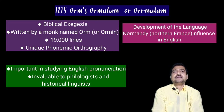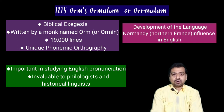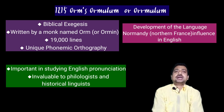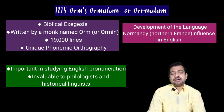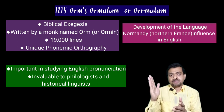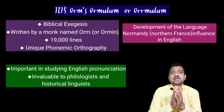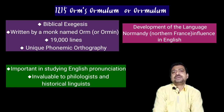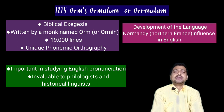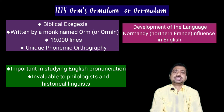In 1215 we have Orm's Ormulum, written by Orm the monk. Consisting of 20,000 lines, it is early Middle English verse — I mention it here because this is the crossing line where the transition from Old English to Middle English occurs. Because of the phonemic orthography adopted by this author, the work preserves many details of English pronunciation existing at that time when the language was under Norman influence. Consequently it is valuable in terms of philology and the historical linguistic tracing of language development.